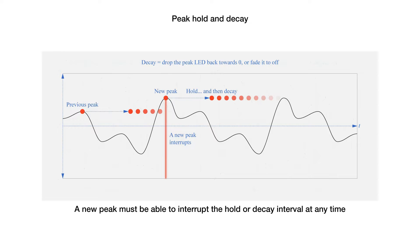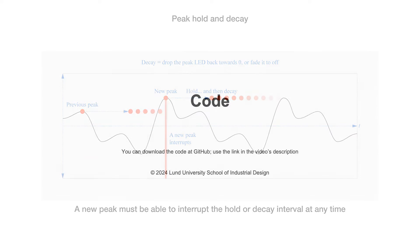We'll use RGB LED rings to visualize the peaks, so we need to look at the peak hold and decay principle. We need an algorithm that detects peaks as fast as possible, lights up the number of LEDs that correspond to the peak value, holds the peak LED for a certain time, and then either drops it back towards zero or fades it to off. So let's look at the code to find out how to do it.